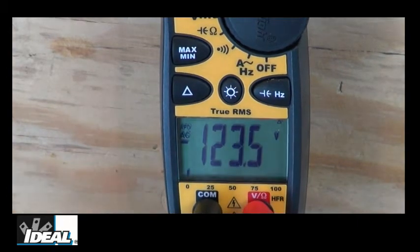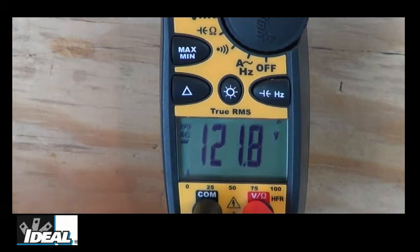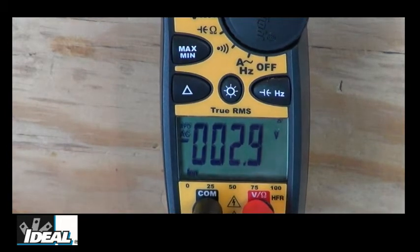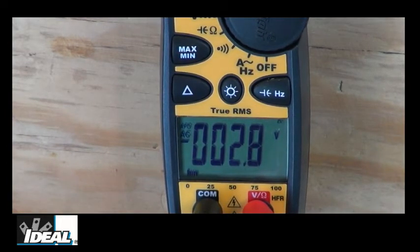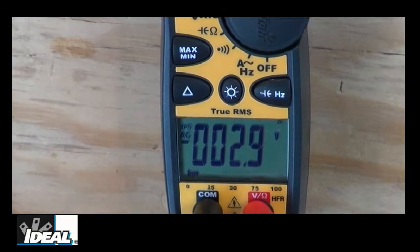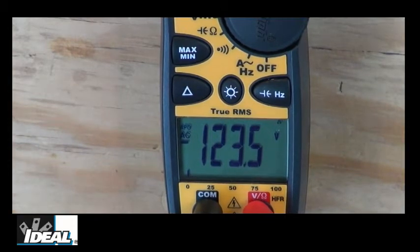Now, if I plug these test leads into another extension cord over here on the other side of this countertop, it's actually going to give me another reading, but it's only going to give me the differences in the two readings. And we're reading about 2.9 volts difference between those two outlets. And so that's another nice feature of the tester we can use in many applications throughout a building.